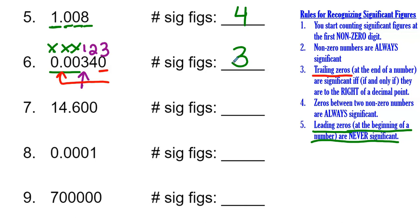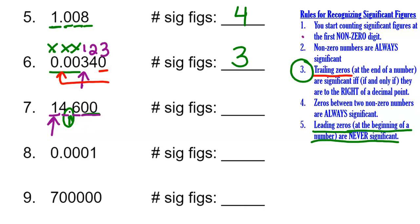Number seven is 14.600. There are no leading zeros, but there are trailing zeros. Applying rule three, we check whether those zeros are to the right of a decimal point — yes, the decimal point is right there, so the zeros are significant. Starting at the first non-zero number, the one, we count: one, two, three, four, five significant figures. Everything is significant because those zeros are to the right of the decimal point.